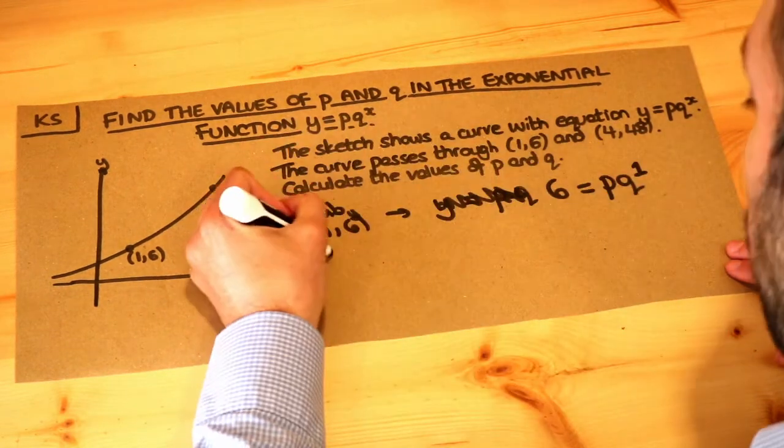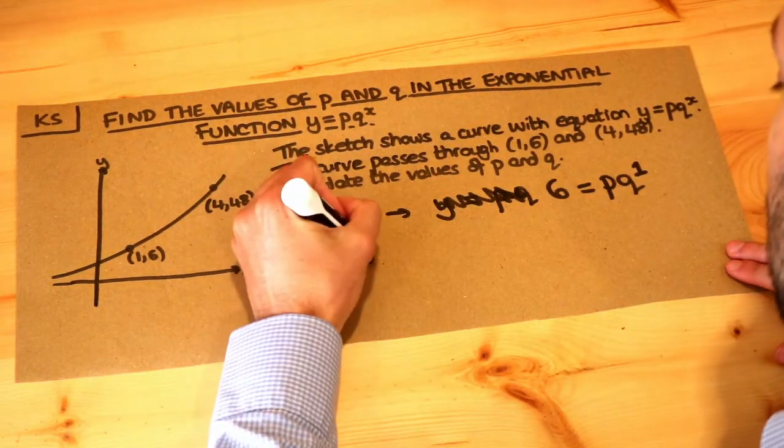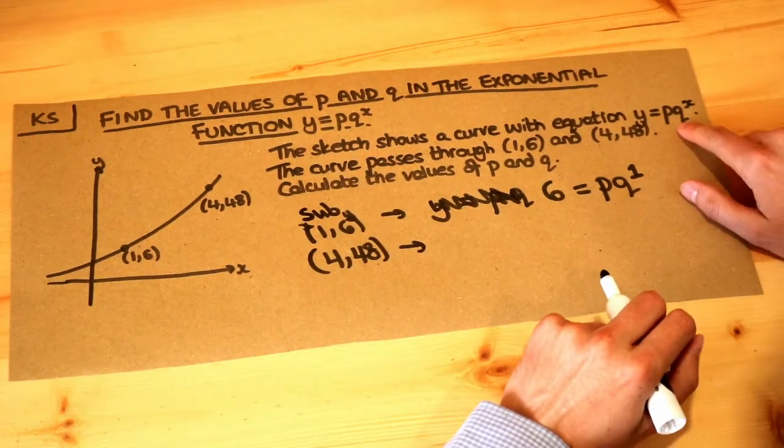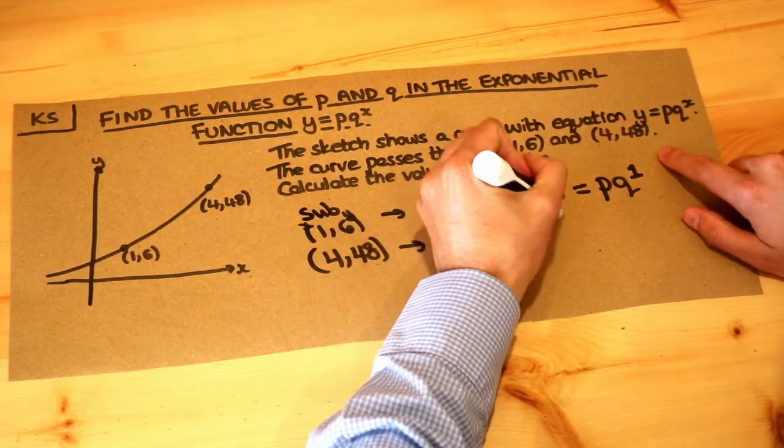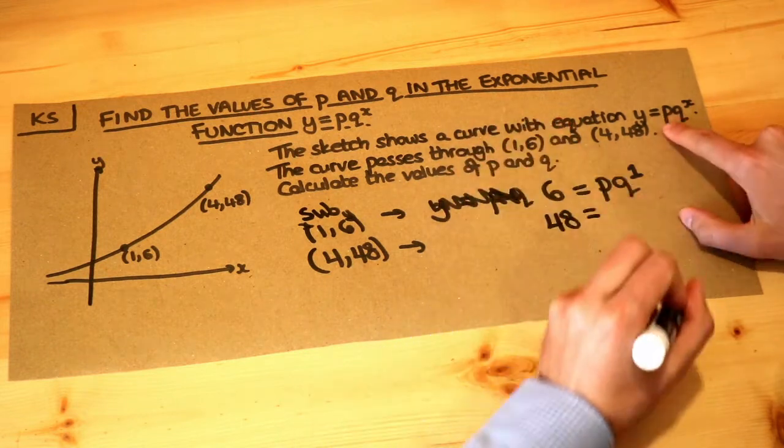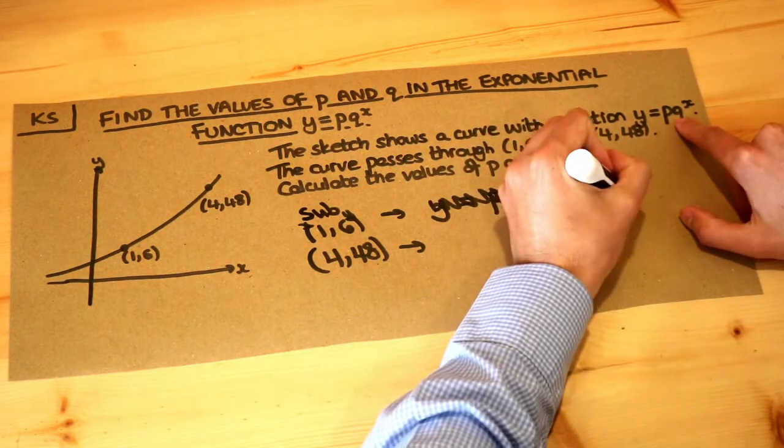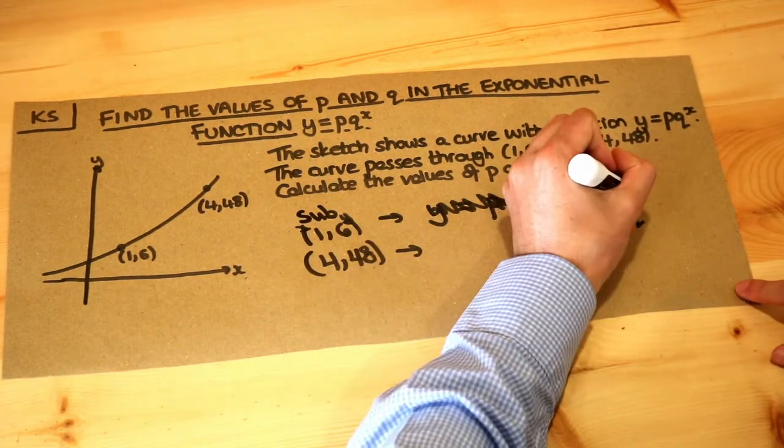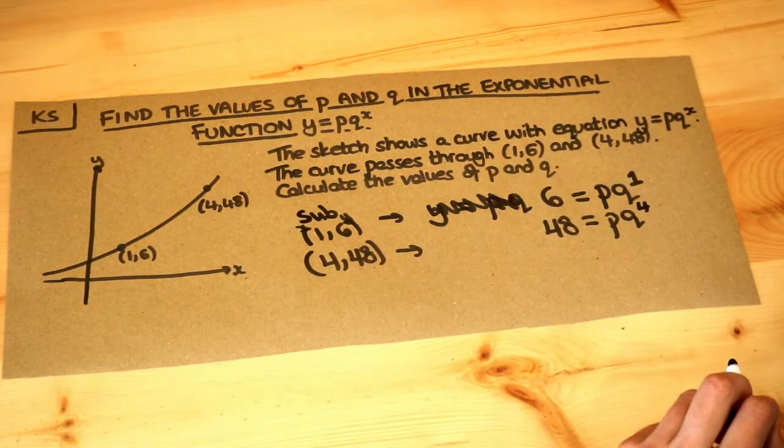Now what about the other point, (4,48)? Well, that's a point on the line, so it must satisfy the equation y = pq^x. So we get y, which is 48, equals p, which we don't know, times q, which we don't know, to the power of x, which in this case is 4. So we have these two equations here.